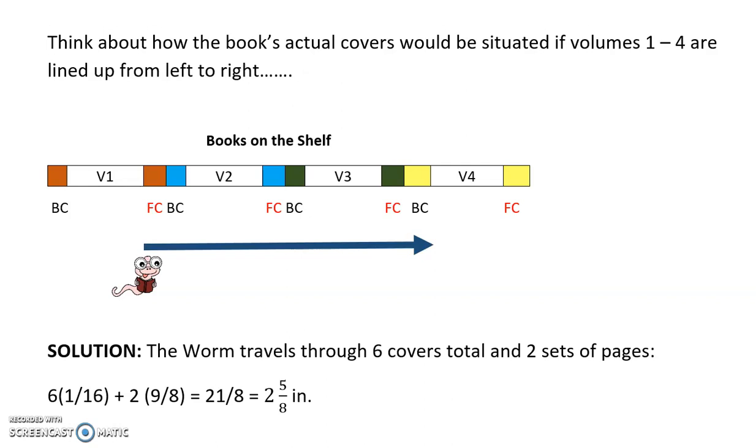So we are told in this problem that this hungry bookworm tunnels through the front cover of volume one all the way through the back cover of volume four. So there's a little bit of trickery here because you've got to think about the way we stack books on a bookshelf if they're lined up from left to right, starting with volume one.